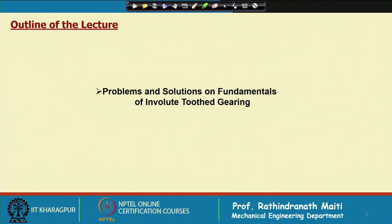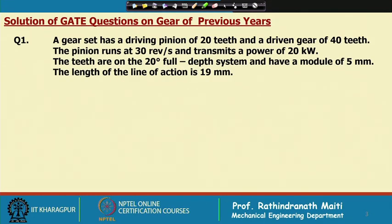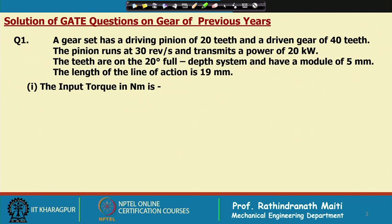The gear has 40 teeth. The pinion runs at 30 revolutions per second and transmits a power of 20 kilowatt. The teeth are on the 20-degree full depth system and have a module of 5 millimeter. The length of the line of action is 19 millimeter. This problem has three to four sub-questions, and the first one is to calculate the input torque.